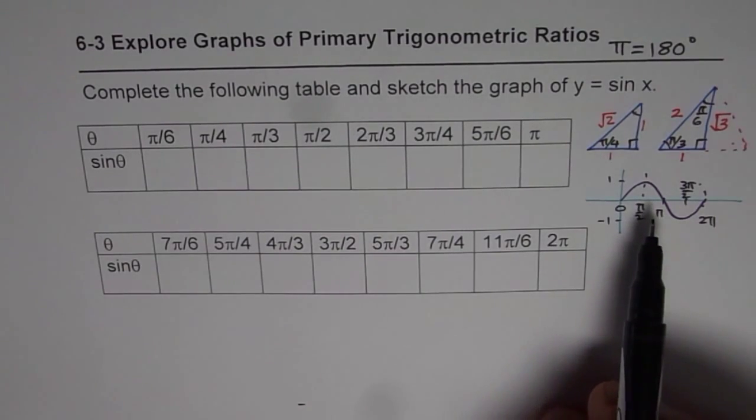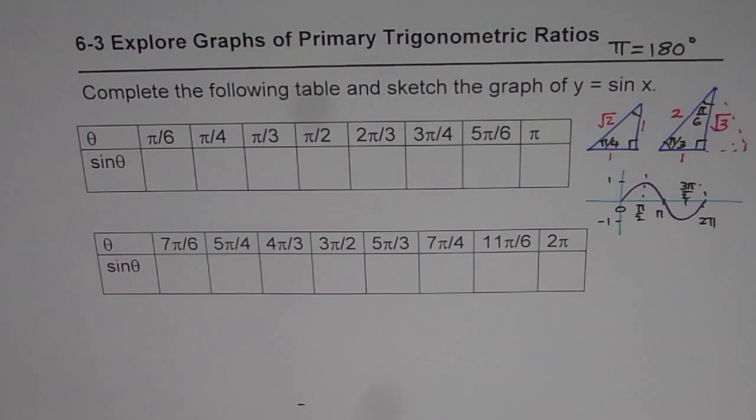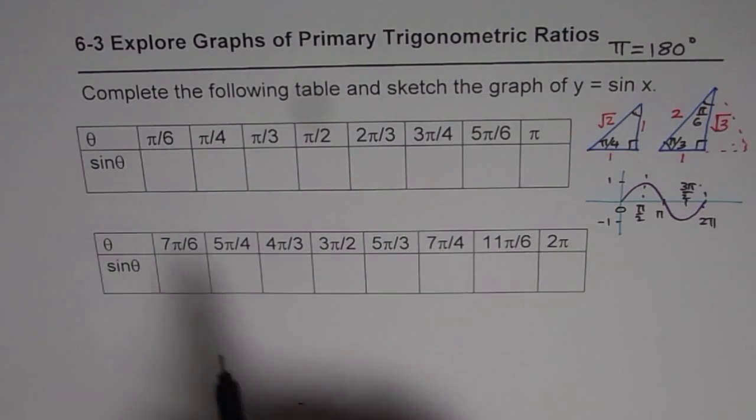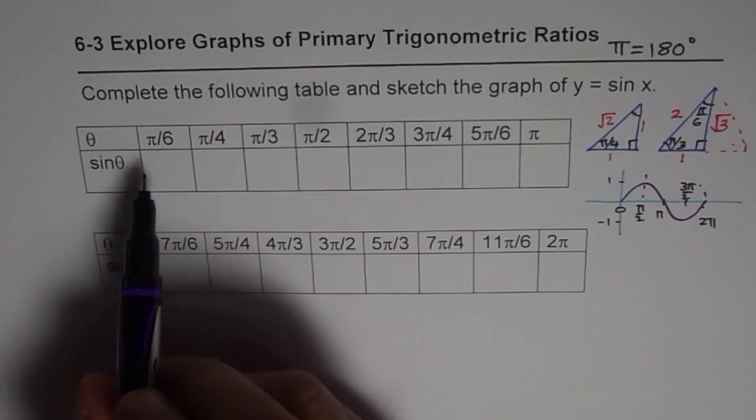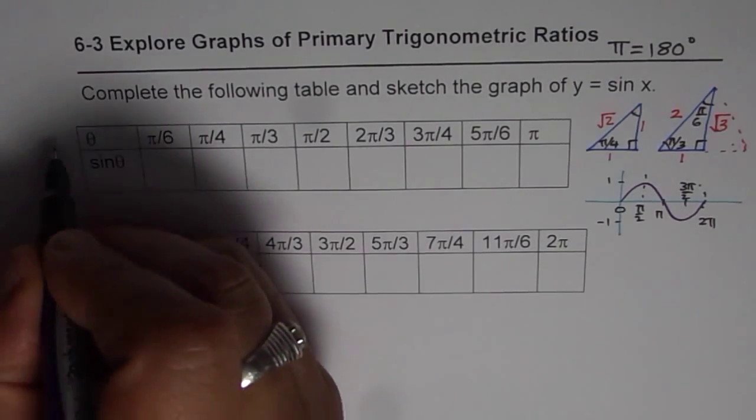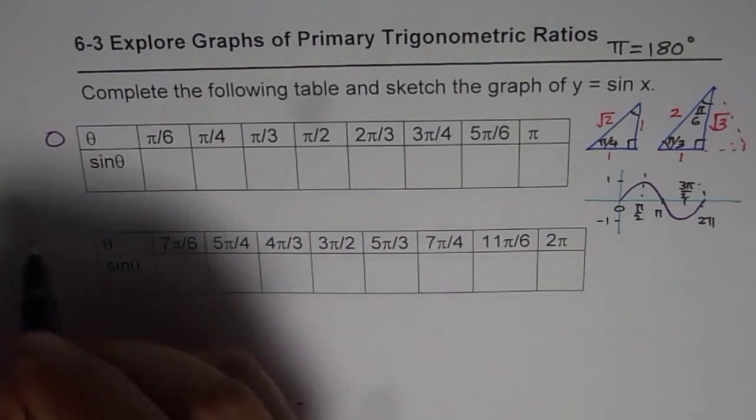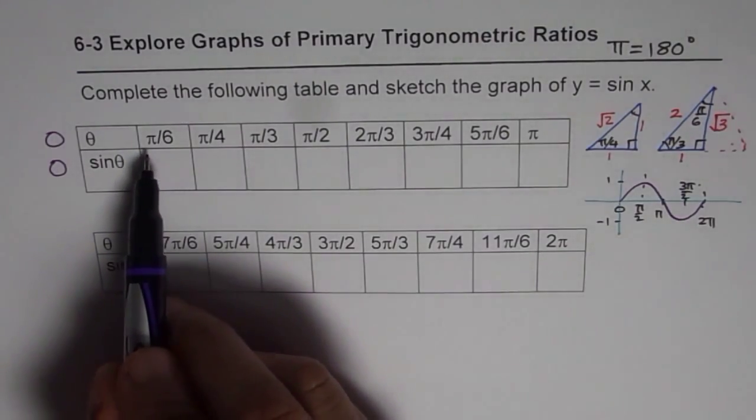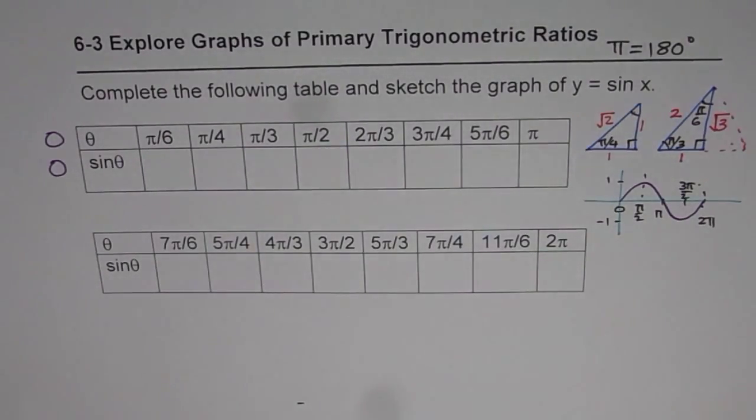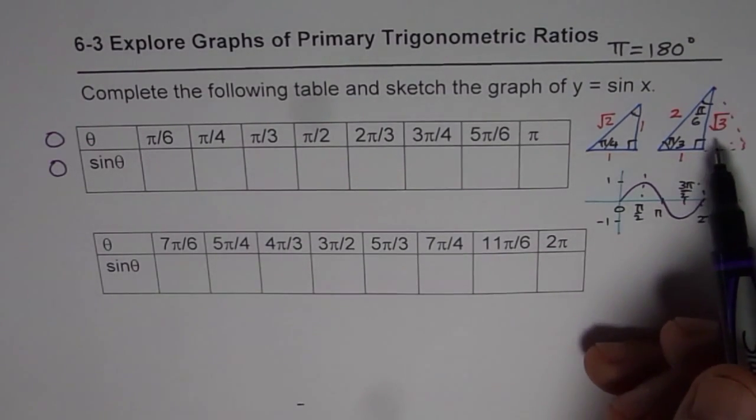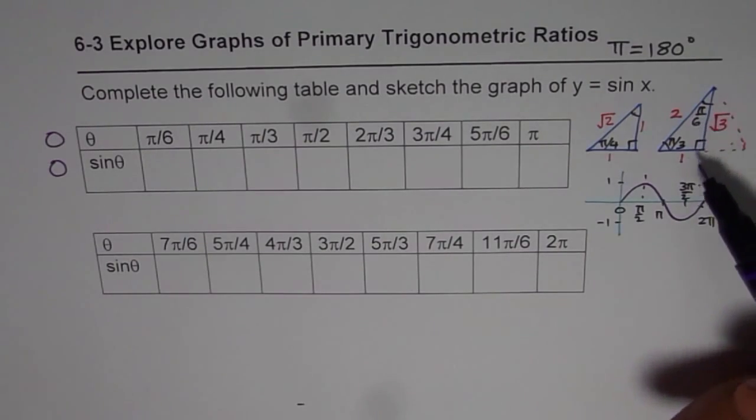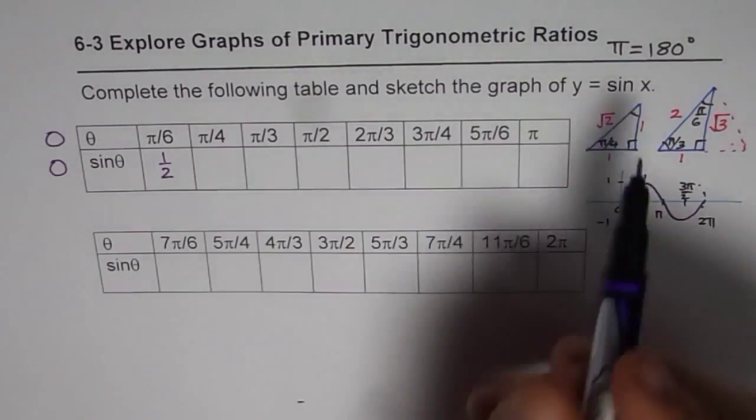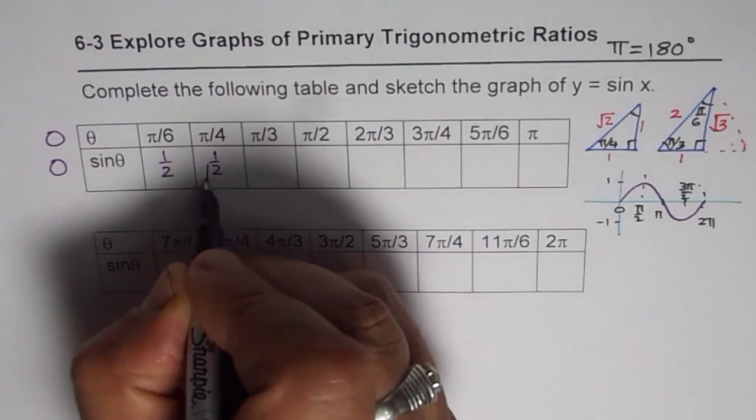So let's begin by placing or completing the table. First one is, actually I should have started with 0. Sine θ when it is 0 is what? That should have been the first value, which I kind of missed it. So if θ is 0, we know sine is 0. π/6, if I need sin(π/6), I can always use my calculator and figure it out, but we don't have to do it since we have our special triangles. Sin(π/6) is, look at the opposite side and the hypotenuse, 1 over 2. So we get it from this, 1/2. π/4, 1/√2.